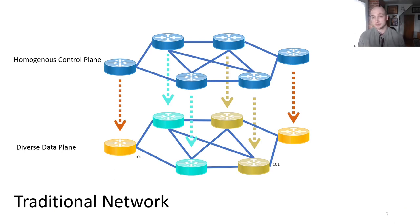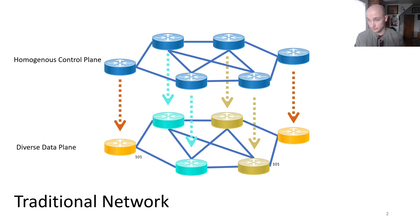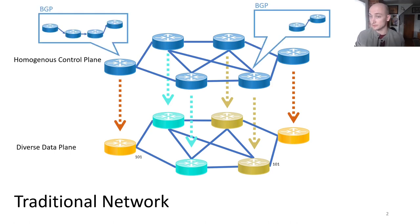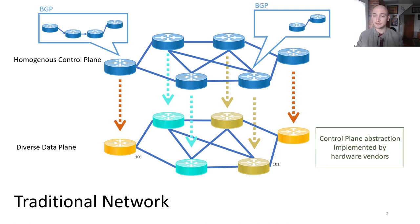A network's purpose is to relay messages across devices to enable communication between physically separated end hosts. In a traditional network, special purpose devices called routers communicate to establish the best — for some definition of best — way of forwarding messages through the network. This is the purpose of the control plane: to compute the best routes on which to forward messages towards their intended targets. With these routes in hand, vendor-provided abstraction code translates these routes into the data plane, which realizes how the messages — i.e., packets and bits — should be forwarded across a variety of possible switch pipelines.